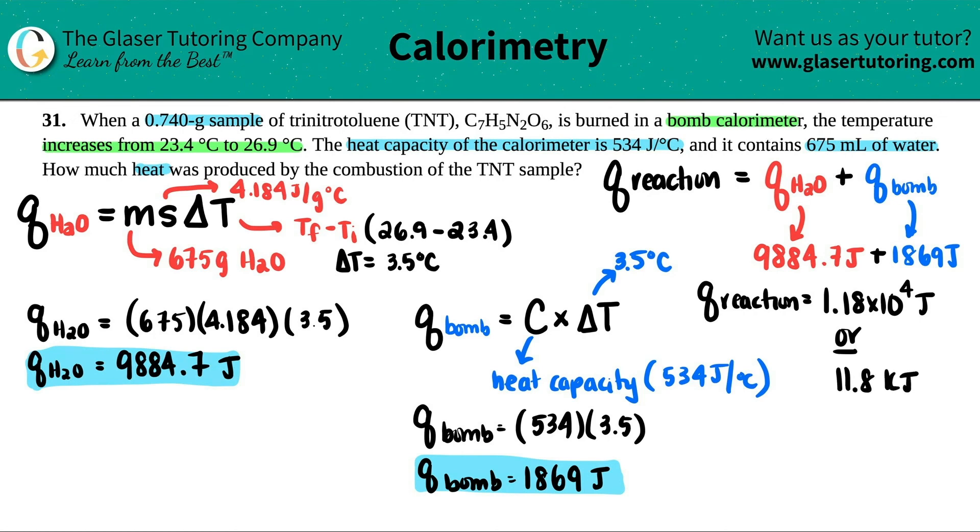There you go. So not bad guys. Just know that when you're dealing with bomb calorimetry, just check to see if it is with water because then you have to add that heat. The thing is, is that even though they told you that it was a 0.74 gram sample of TNT, that has nothing to do with the calculation for finding how much total heat it is.